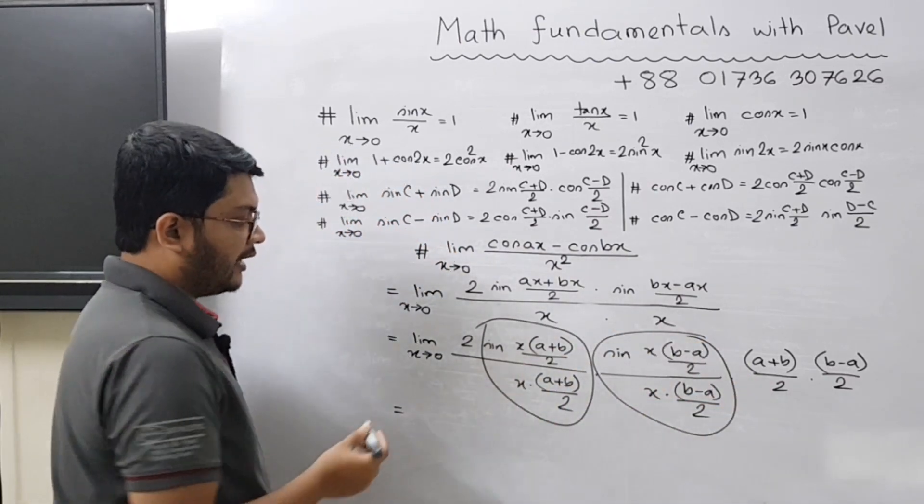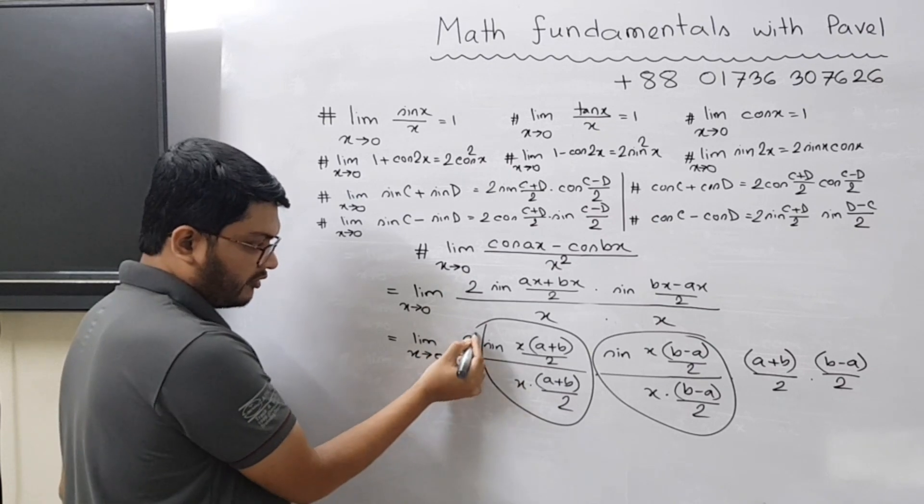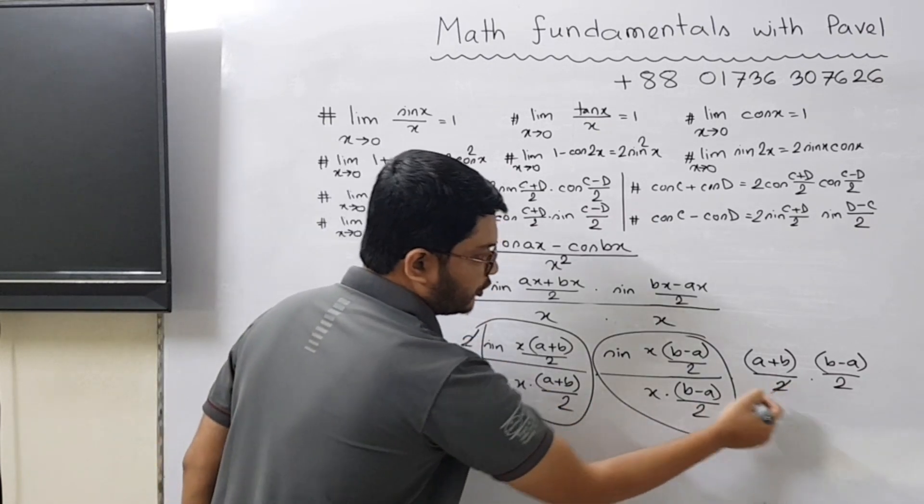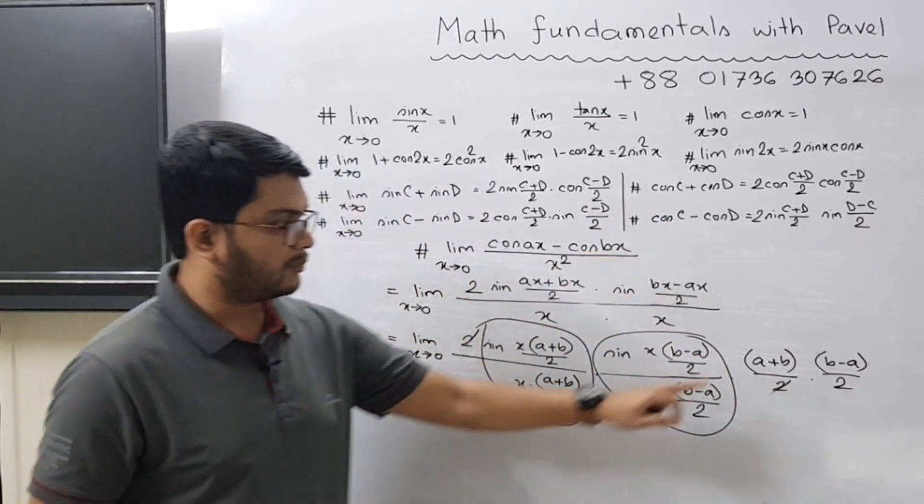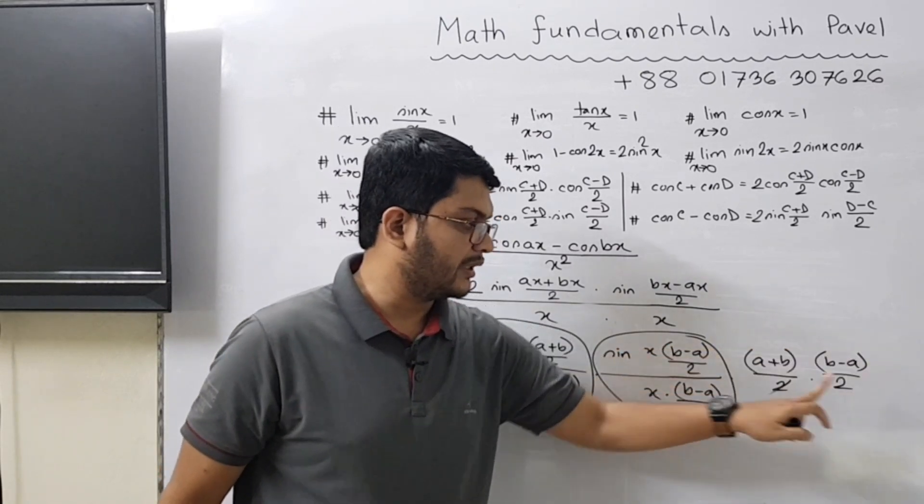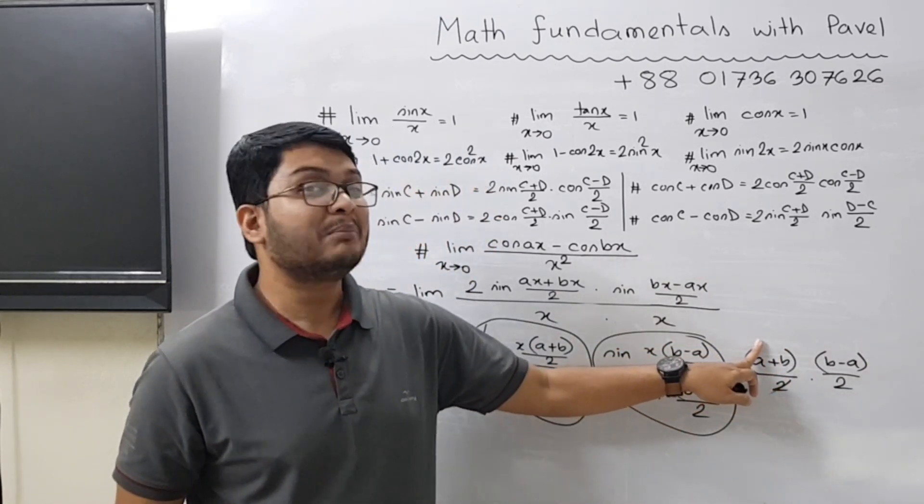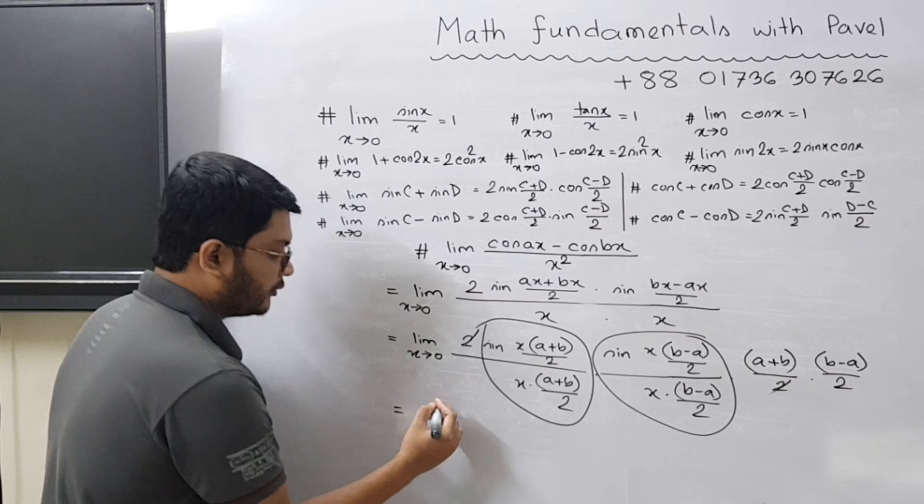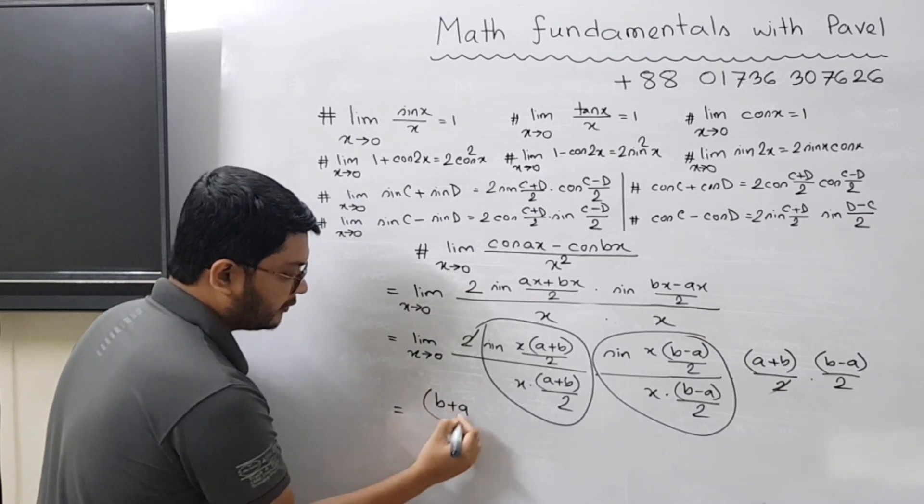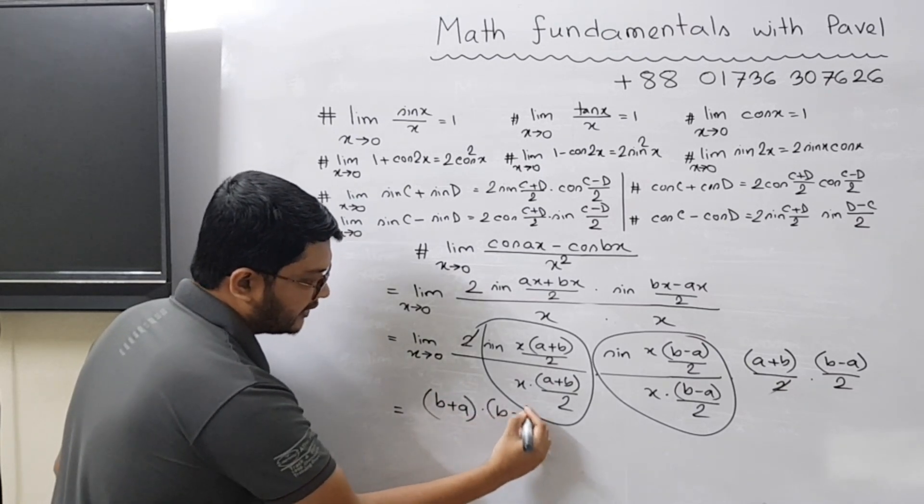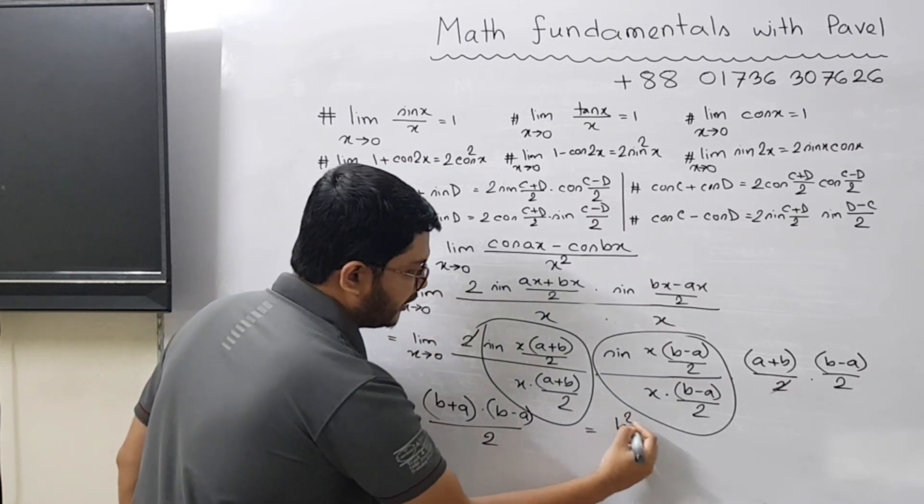So sine theta by theta becomes equal to one, and this part also becomes one. Now you are left with this two, so you divide this two and this two. Whatever left: a plus b times b minus a divided by two.